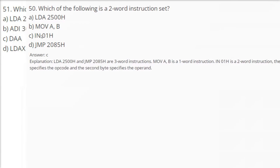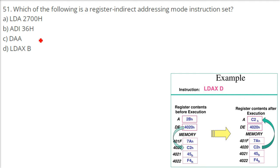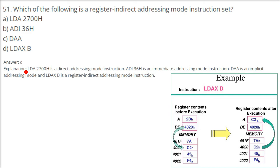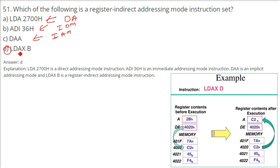Which of the following is a register indirect addressing mode instruction? The answer is D — LDAX B. LDA 2700 is a direct addressing mode instruction because 2700 is already given. ADI 36H is an immediate addressing mode instruction because 36H is the data. DAA is an implicit addressing mode because nothing is given. LDAX B is a register indirect addressing mode instruction.